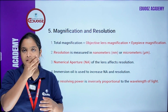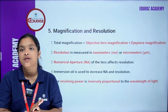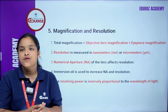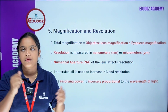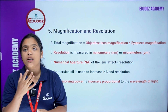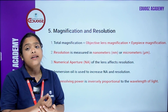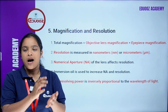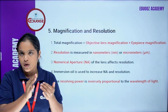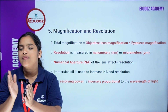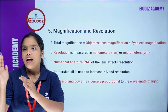Magnification and resolution: Resolution is measured in nanometers. The numerical aperture of a lens affects resolution. Immersion oil is used to increase numerical aperture and resolution. Resolving power is inversely proportional to the wavelength of light. Total magnification equals objective lens magnification multiplied by eyepiece magnification.